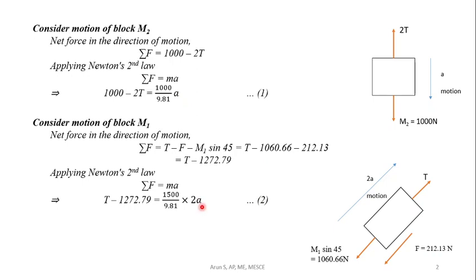We solve the equations simultaneously to find T and A. Adding equation 1 and equation 2, the 2T terms cancel out. We get 1000 minus 2545.58 equals A divided by 9.81.